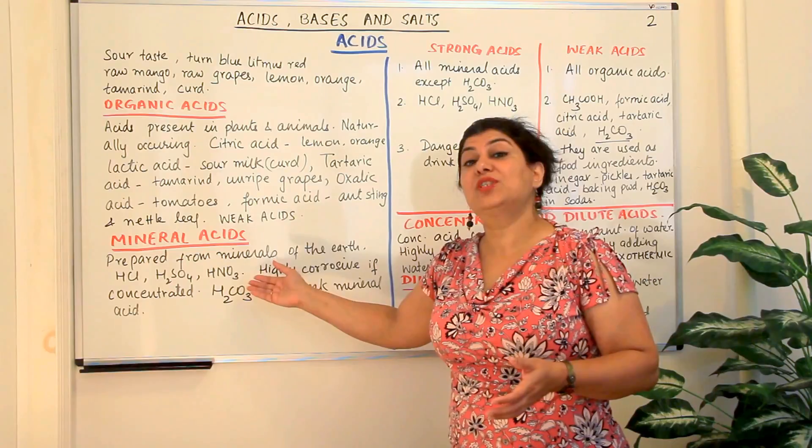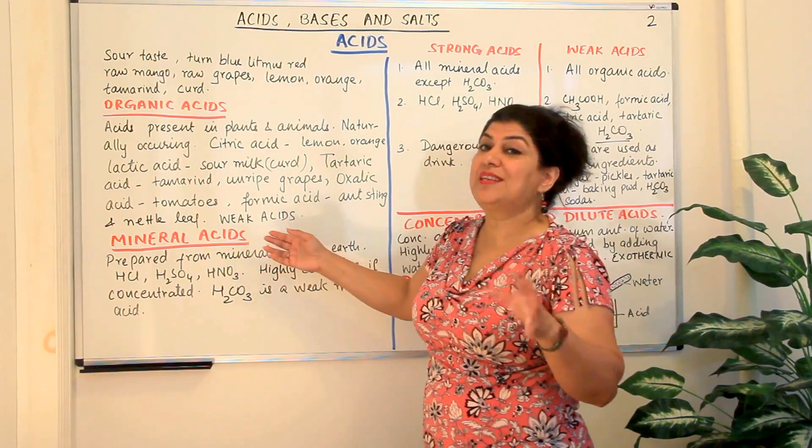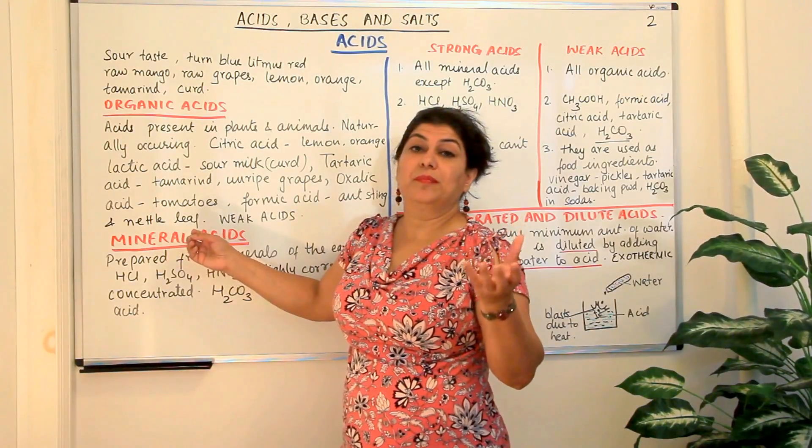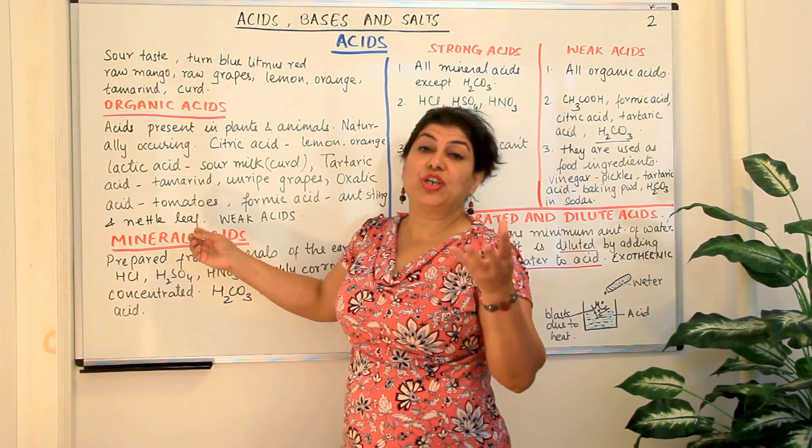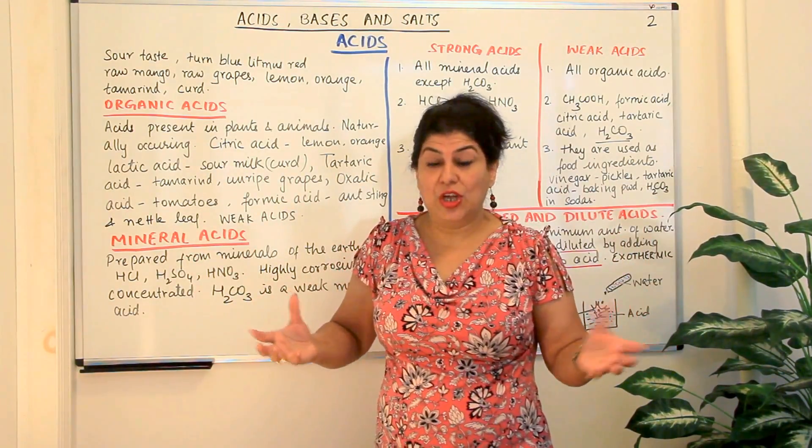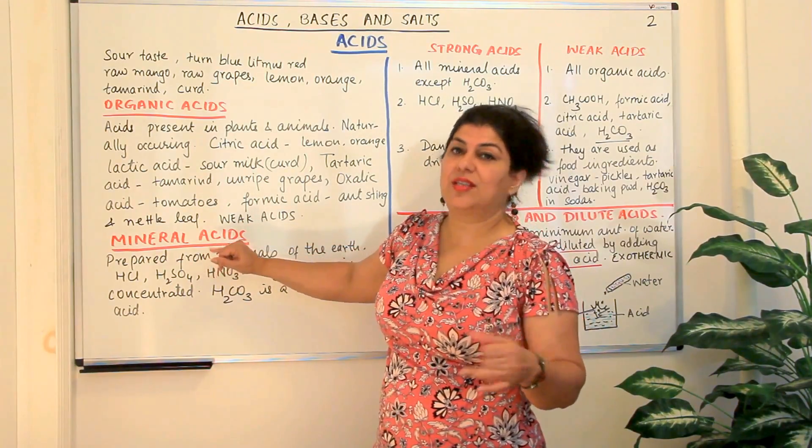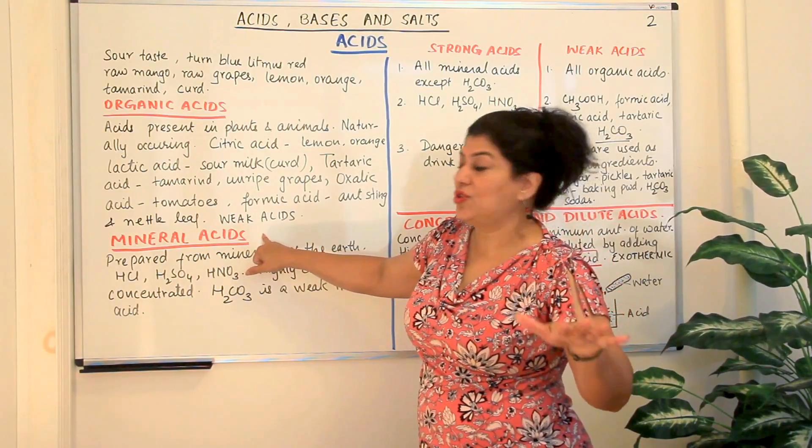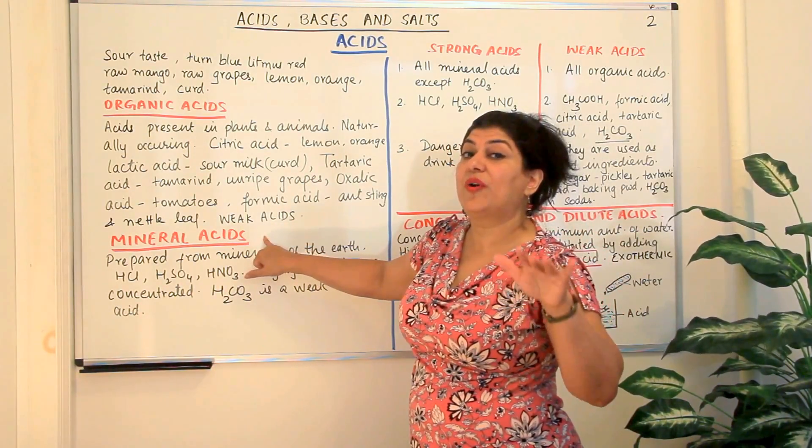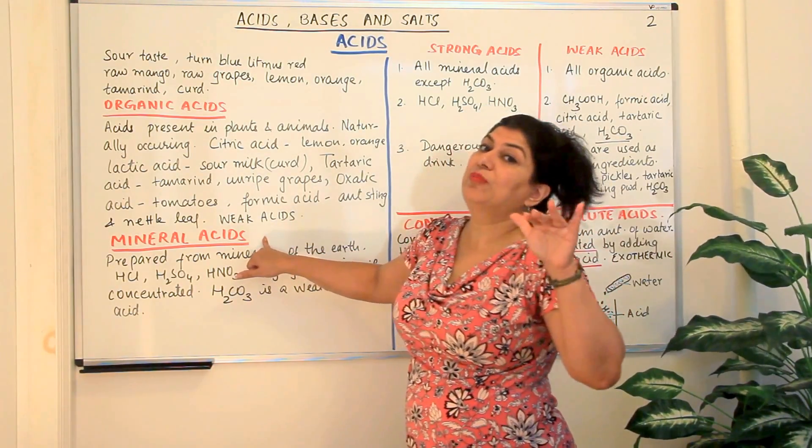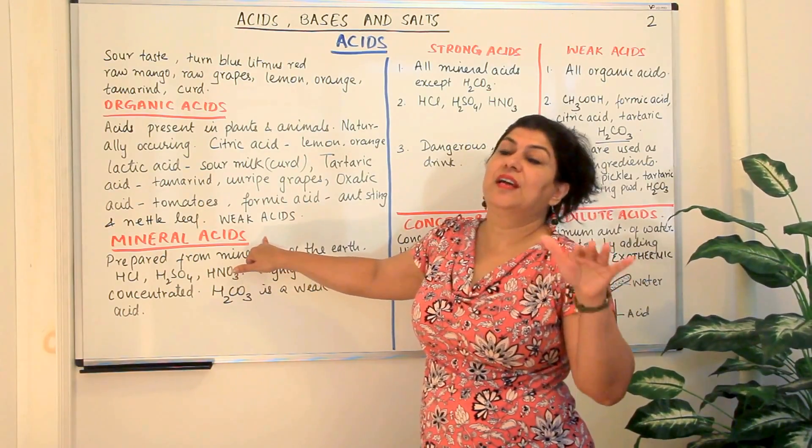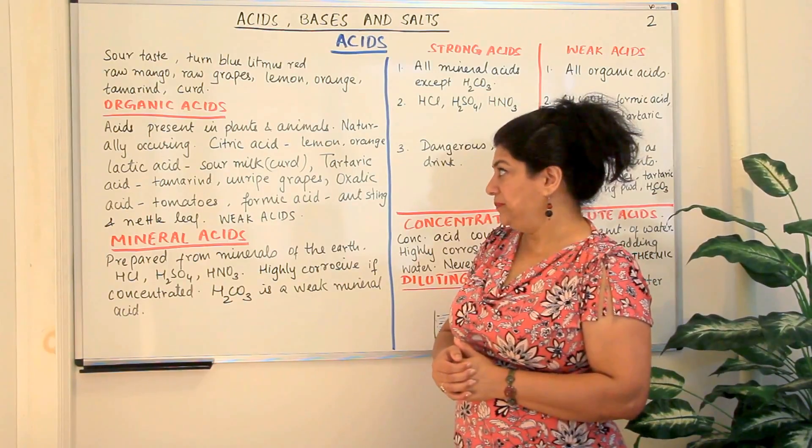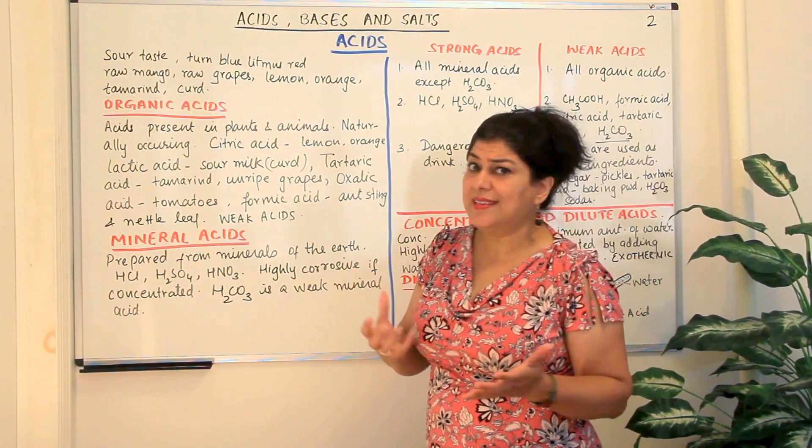So what would mineral acids be? What are minerals? Minerals are the rocks and the different chemicals which are present in the crust of the earth. So whether they are metals, they are non-metals, whatever these metallic and non-metallic minerals which are present in the crust of the earth, when you get your acids from the earth, from the mineral deposits in the earth, that is when such acids are known as the mineral acids. So let us study these in details now.